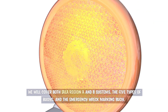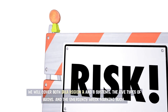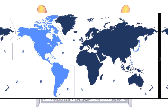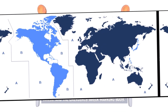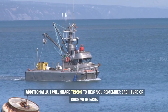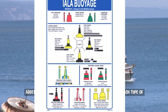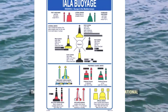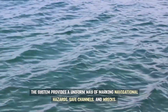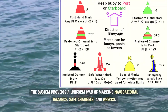We will cover both IALA Region A and B systems, the five types of buoys, and the emergency wreck marking buoy. Additionally, I will share tricks to help you remember each type of buoy with ease. The system provides a uniform way of marking navigational hazards, safe channels, and wrecks.